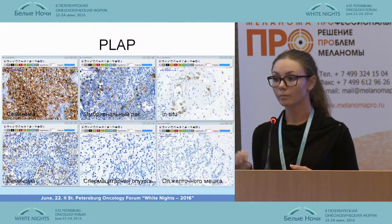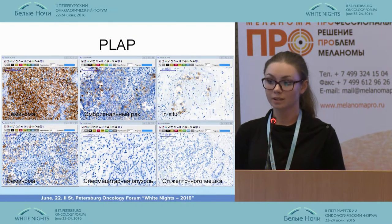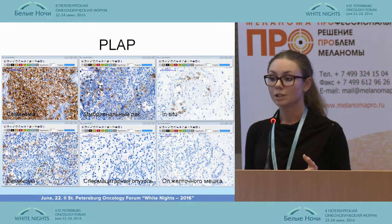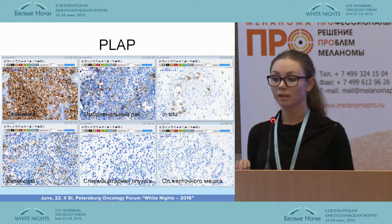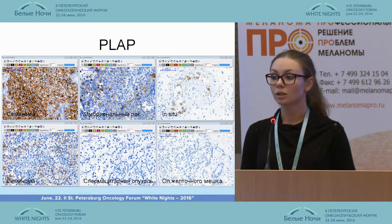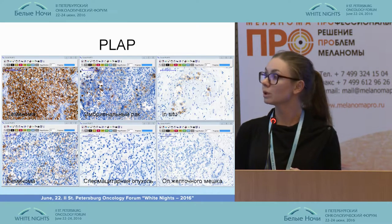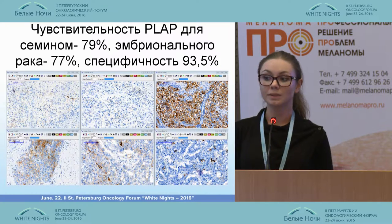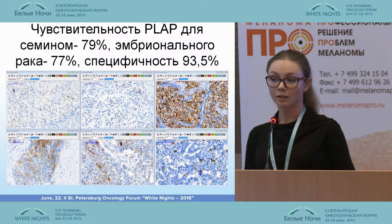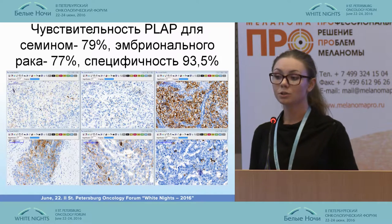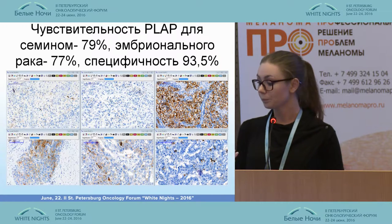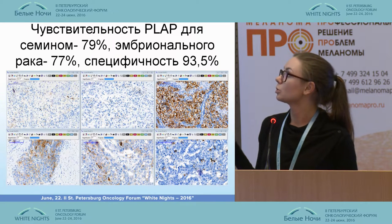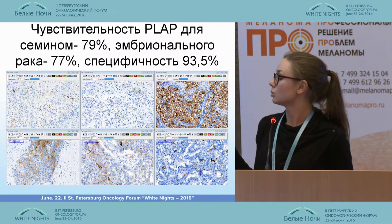PLAP is expressed with membrane coloring in seminoma, embryonal cancer, and neoplasia. Other tumor types do not show specific coloring. The sensitivity for seminoma is 79 percent and specificity is very high at 93.5 percent. Different types show different levels of expression, with some almost disappearing in certain cases.